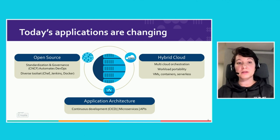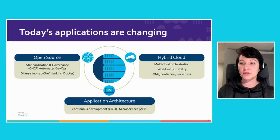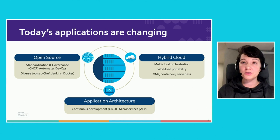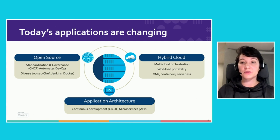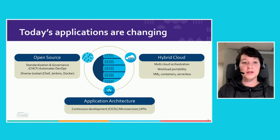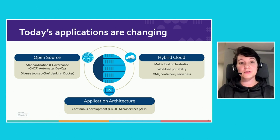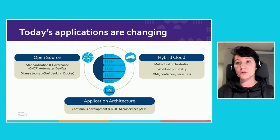The architecture of the applications themselves is changing as well. We're moving from monolithic applications into microservices applications that are split up into microservices, leveraging APIs — both internal and third-party APIs. And this is where continuous development becomes instrumental to help fulfill the agile processes that development teams are following right now.